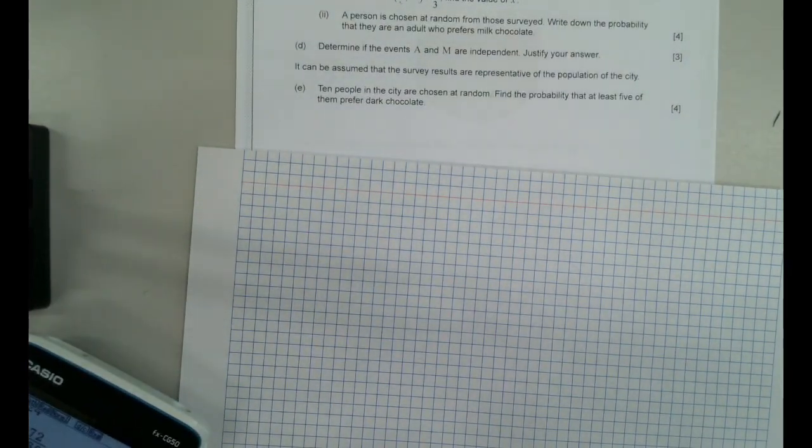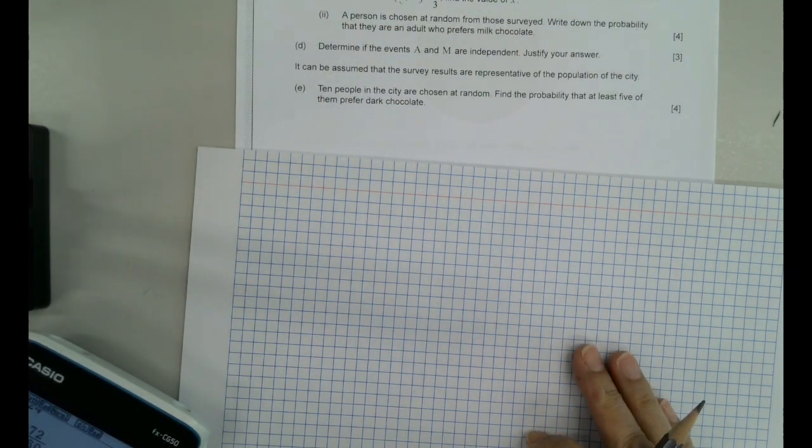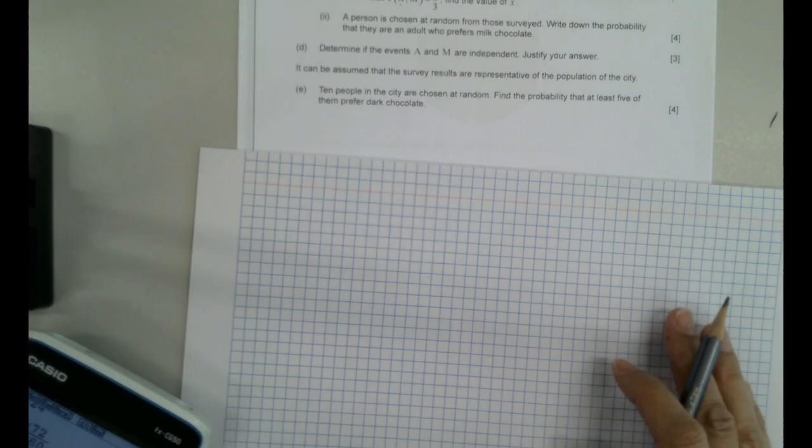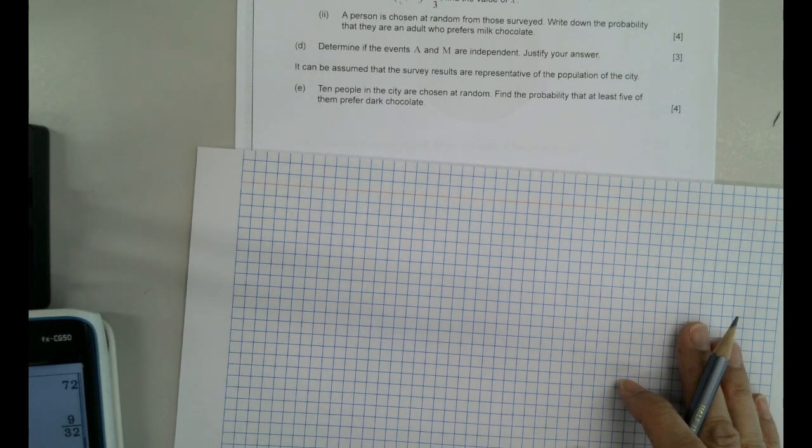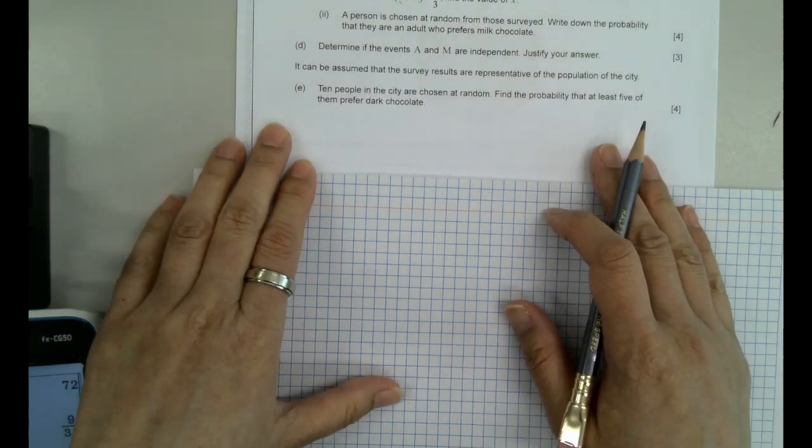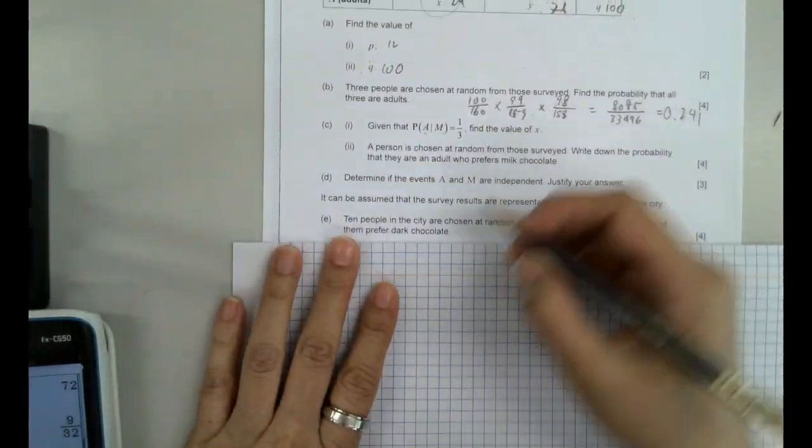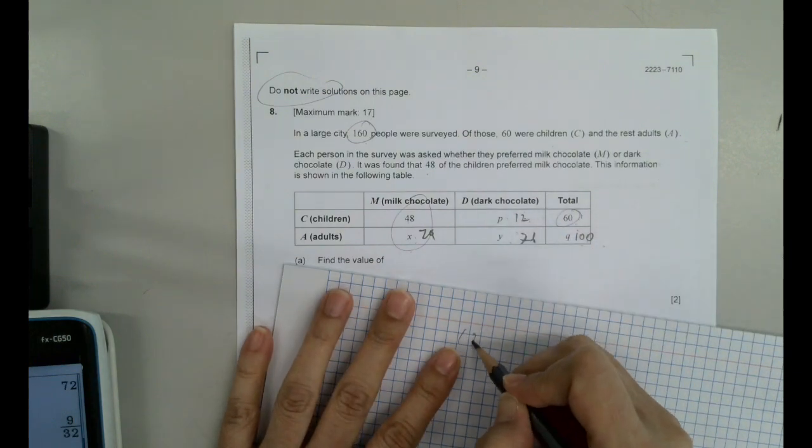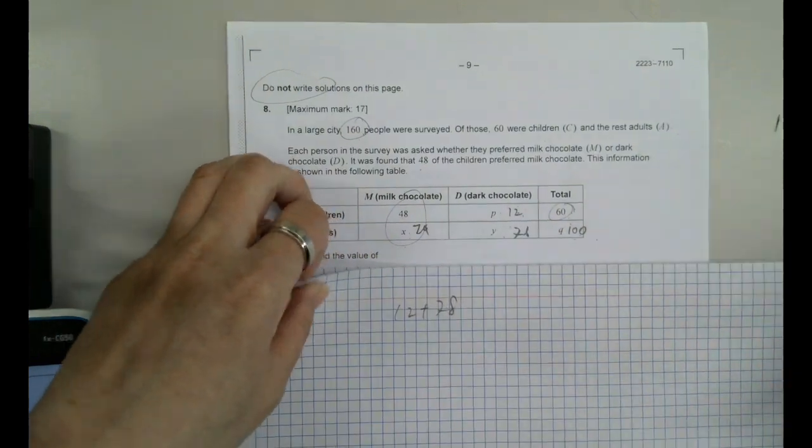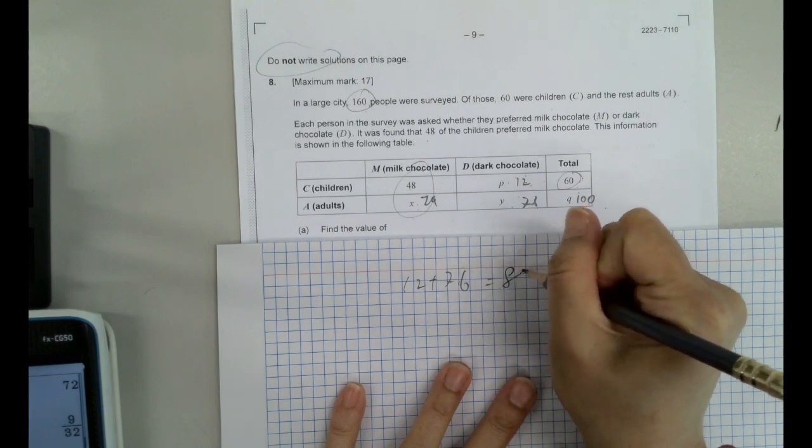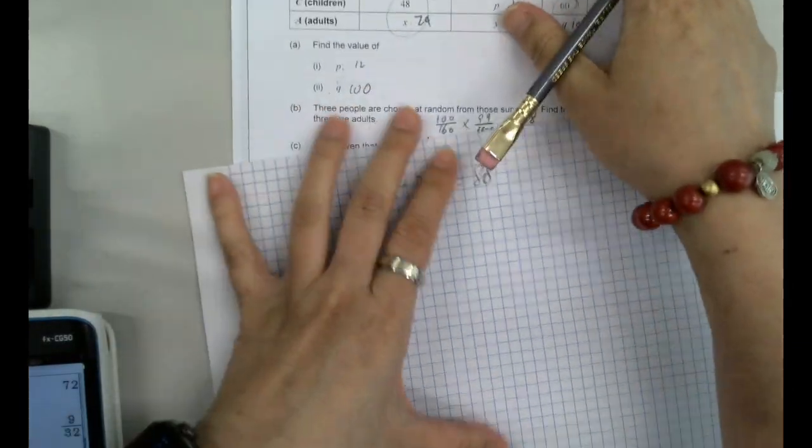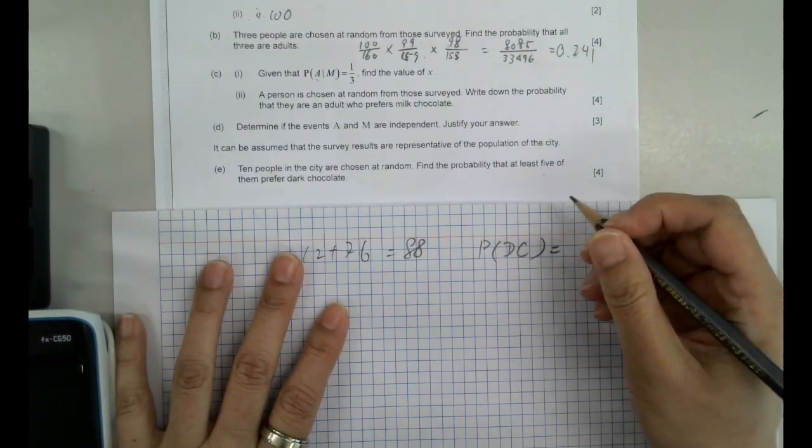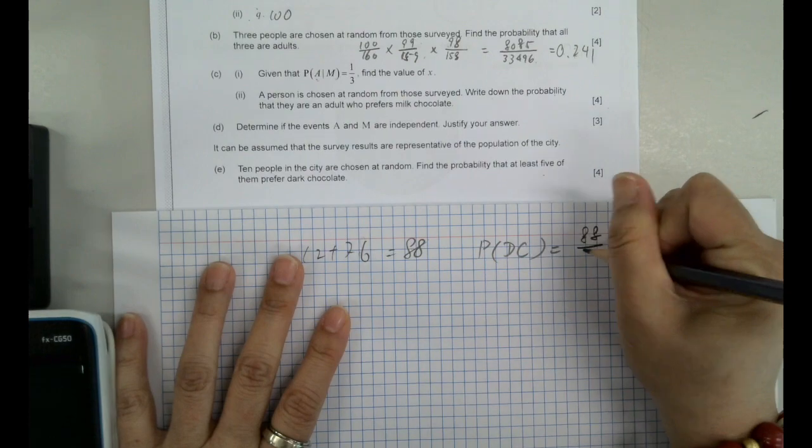If they can assume the survey represents the whole city there, so what is the probability of at least 5 of them like dark chocolate? Now we have the dark chocolate there, so we need to find out number of dark chocolate people. Number of dark chocolate people is 12 plus 76, careful, this will go to 88.